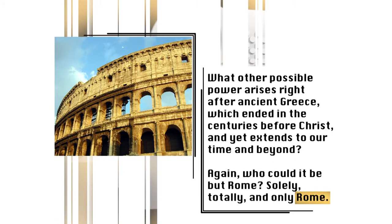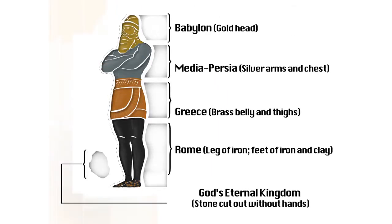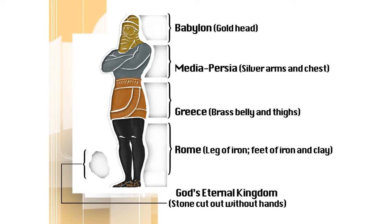This fact helps positively identify this kingdom, because what world power arising after Greece — after the bronze belly and thighs — extends all the way to the end of time, though it changes form? Only one, and that is Rome. Solely, totally, and only Rome. What other possible power arises right after ancient Greece, which ended centuries before Christ, yet extends to the end of time and beyond? It could be solely, totally, and only Rome. Babylon, Medo-Persia, Greece, Rome, second coming. What firmer, broader, and more immutable foundation than the history of the world itself could God have used to build such a rational edifice for faith? The world could blow up tomorrow, but there'll have always been a Babylon, a Medo-Persia, a Greece, a Rome. We have been given a foundation as immutable, as unchangeable, as the past itself. Even God can't change the past. So this is what God has given to help us ground our faith in — it's a rational faith, but it's faith.